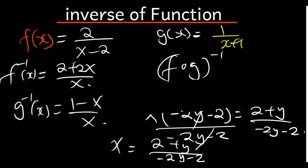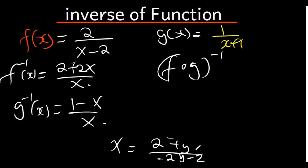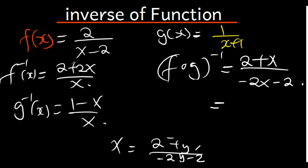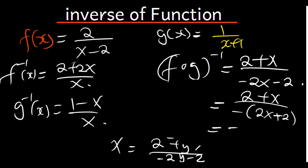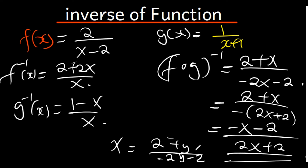This is the inverse expression — now replacing y with x: the inverse equals (2 plus x) divided by (negative 2x minus 2). If I factor out negative from the denominator, this simplifies to (x plus 2) divided by (negative(2x plus 2)), or equivalently negative (x plus 2) divided by (2x plus 2), which can also be written as (negative x minus 2) divided by (2x plus 2). This is our final answer.